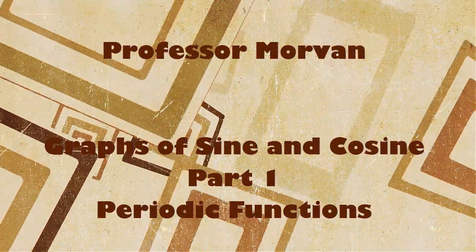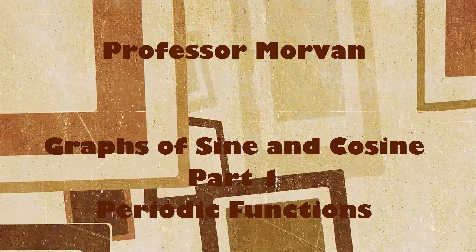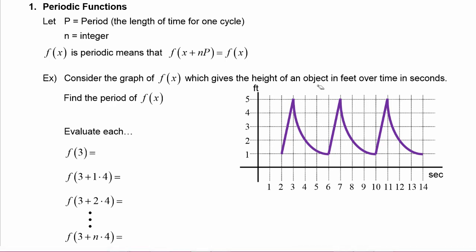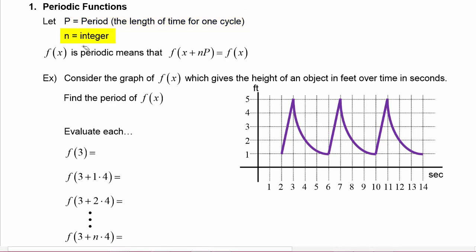In part one of our lesson on graphs of sine and cosine, you're going to learn about periodic functions. A quick description of a periodic function is that it is a function that repeats itself over and over again. We're going to let p stand for the period, which is the length of time for one cycle of the graph — the piece of the graph that repeats itself. We'll let n stand for an integer. Then to say that f of x is periodic means that f of the quantity x plus n times p has to equal f of x.